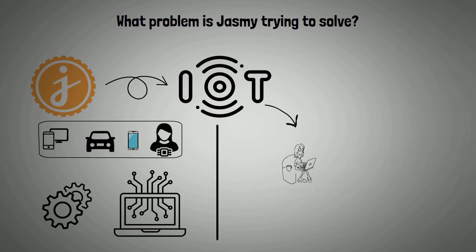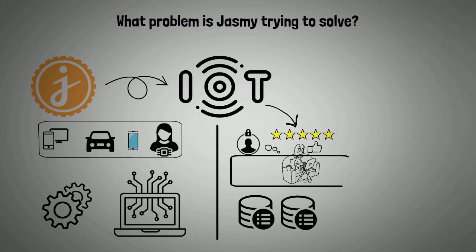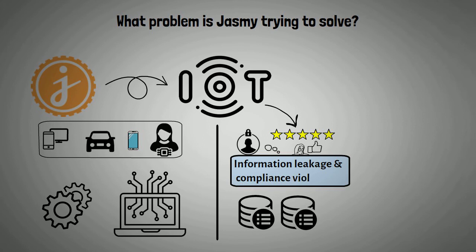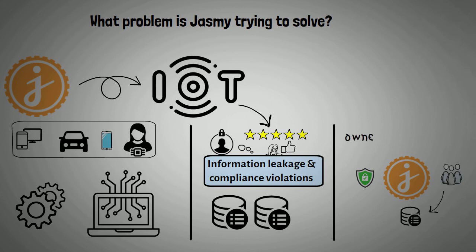While the IoT promises to enhance customer experience, it comes at a potentially heavy price with chances for privacy infringement. The massive amounts of data involved create significant security risks, with the possibility of information leakage and compliance violations. Jasmine provides a safe, user-oriented environment in which data can be stored, saved, or exchanged — all based on the data owner's preferences.